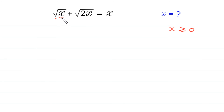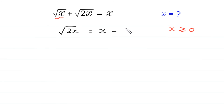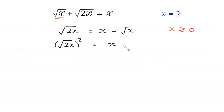Now, we move this square root of x to the right side. The left side has square root of 2x, equal to x minus square root of x. From here, we take the square of both sides: square root of 2x squared is equal to x minus square root of x, whole squared.